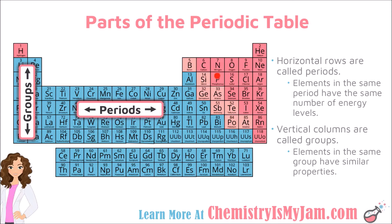The vertical columns on the periodic table are called groups, and elements in the same group tend to have similar properties. A great example of that is the group where copper is located. You'll also find silver and gold there. These are three metals that we very often make jewelry out of. They are solid at room temperature, they are shiny which means they have luster, and you can draw them into wires. They all have similar properties and can be found in the same group on the periodic table.